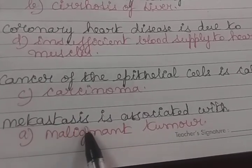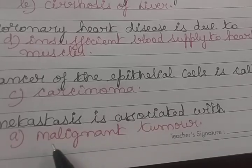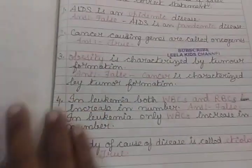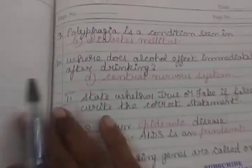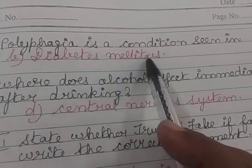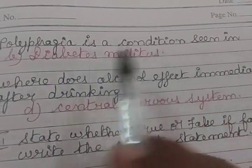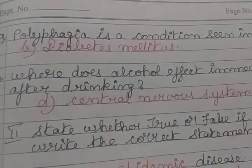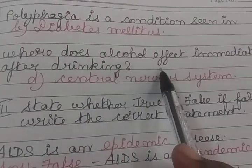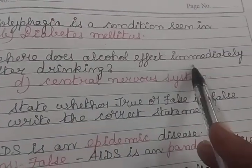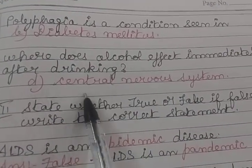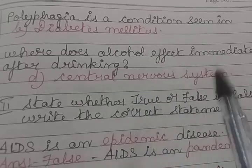Metastasis is associated with malignant tumour. Polyphagia is a condition seen in diabetes mellitus. Where does alcohol affect immediately after drinking? The central nervous system.